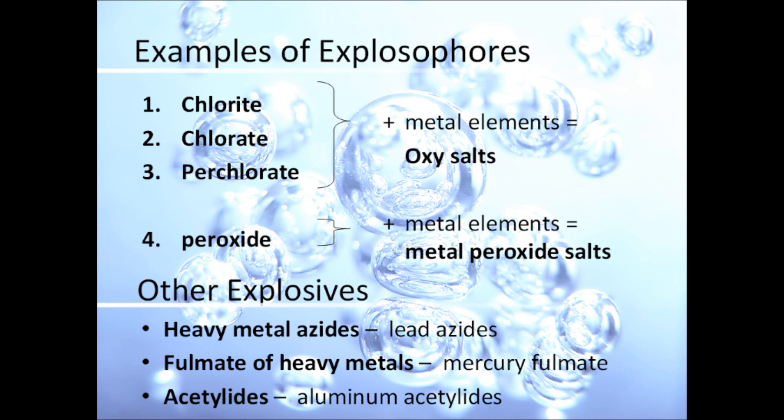The first three, when added to metal elements, create oxysalts, and the peroxide group added to metal elements make metal peroxide salts, both of which are powerful oxidizers. Even so, not all explosives use explosophores. Heavy metal azides, such as lead azide, fulminates of heavy metals like mercury-2-fulminate, and acetylides, for example aluminum acetylides, are also highly reactive.